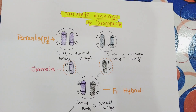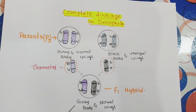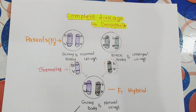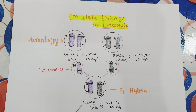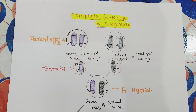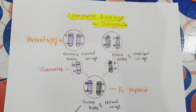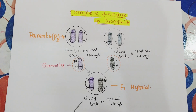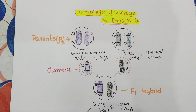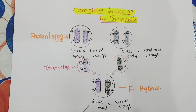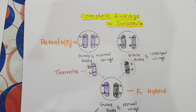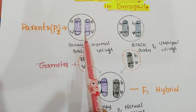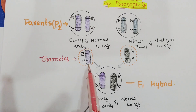Let's see the cross made by Morgan in Drosophila. Complete linkage in Drosophila was first observed by Bridges. The parents taken were grey body with normal wings, and black body with vestigial wings. From the grey body normal-winged parent we get gamete BV (capital B, capital V), and from the black vestigial parent we get gamete bv (small b, small v).